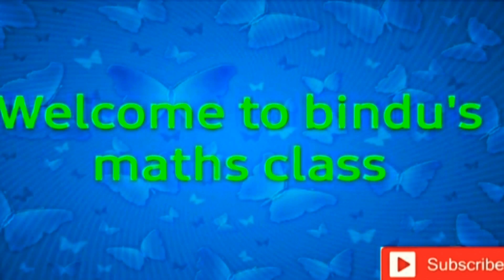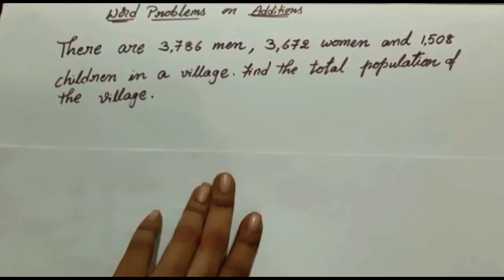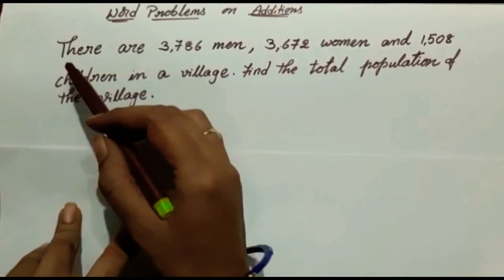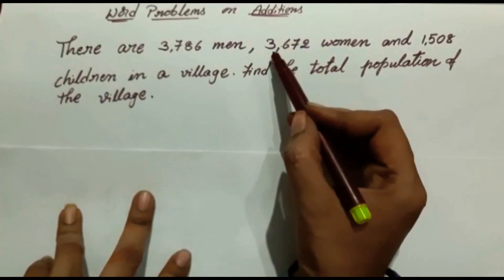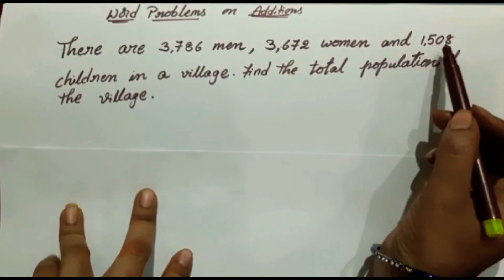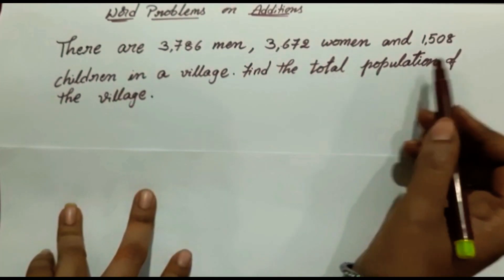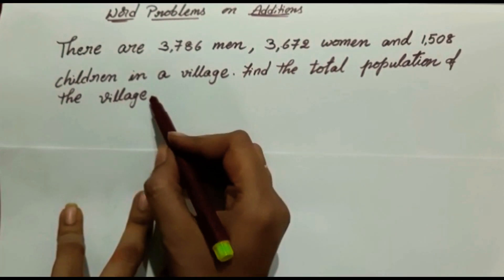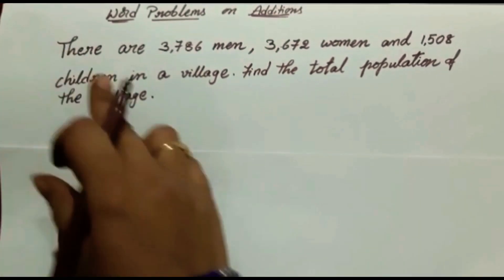Hello and welcome to Bindu's Math Class. Subscribe my channel for more videos if you are not yet subscribed. Today's topic is about word problems on addition. Here the question is: there are 3786 men, 3672 women, and 1508 children in a village. Find the total population of the village.